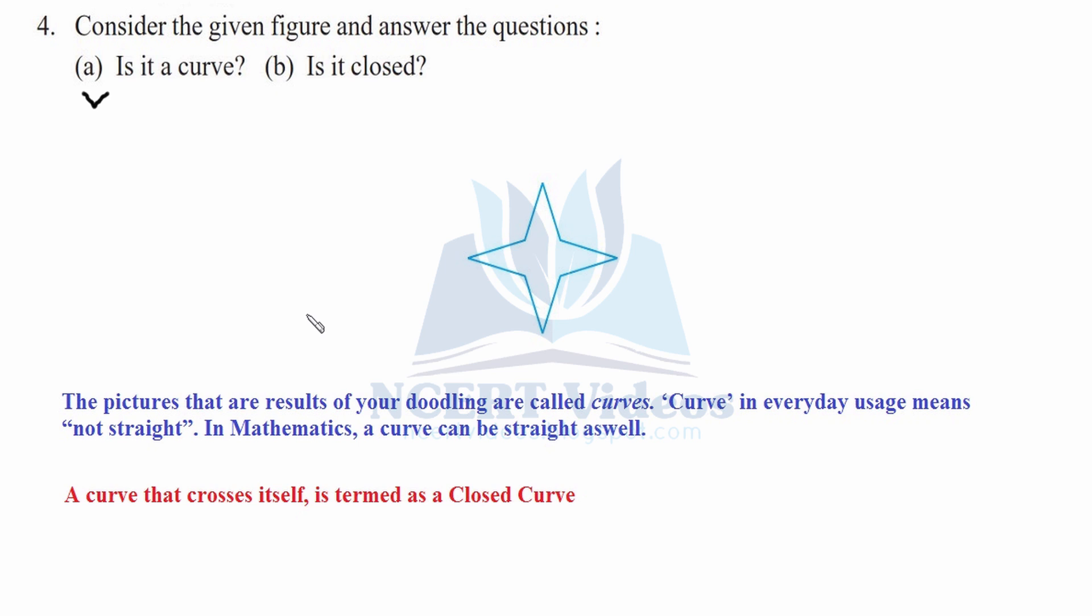It is a curve. Now checking for whether it is closed. A curve that crosses itself is termed as closed curve. It is coming to its initial point, that is it is crossed. Therefore it is closed as well. Question 4 follows both the things.